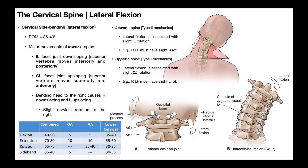Throughout the segment, this leads to several effects. On the right side, the facet joints move more into their closed-packed position, and the intervertebral foramina — or neural foramina — become narrower, leaving less space for spinal nerve roots. So if an individual has a radiculopathy with a compressed nerve root on the right side, they may not tolerate right lateral flexion because those foramina are closing.